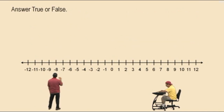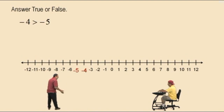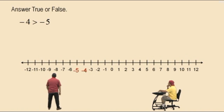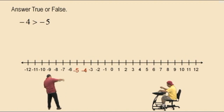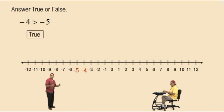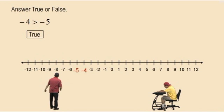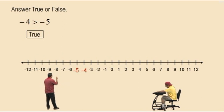All right, Charlie. Let's do some problems — answer true or false. Forget about that crocodile; think about the number line and think to the right of or to the left of. True. Very nice — that's right. Negative 4 is greater than negative 5. Is negative 4 to the right of negative 5? Yes. Therefore it is true.